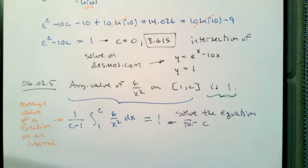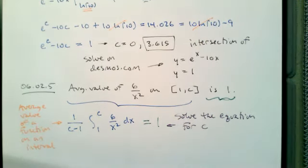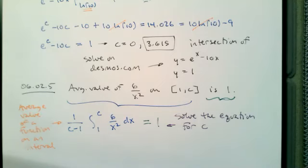On a related note, the previous problem was also an average value question. We wanted the area below and the area above to be the same, so we were finding the value of c for which the average value of e to the x minus 10 on the interval from zero to c is equal to zero.